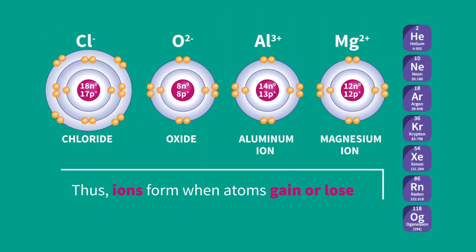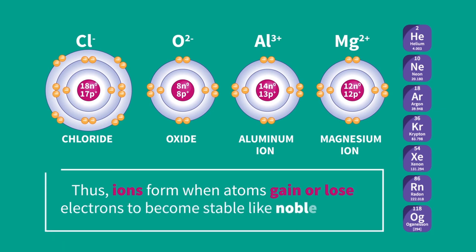Thus, ions form when atoms gain or lose electrons to become stable like noble gases.